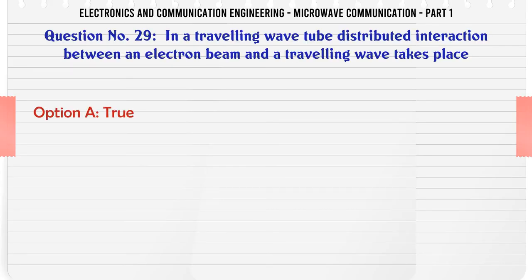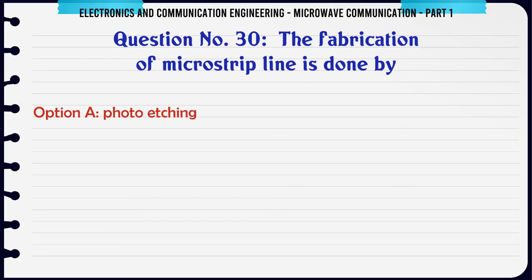In a traveling wave tube distributed interaction between an electron beam and a traveling wave takes place: A. True, B. False. The correct answer is True.